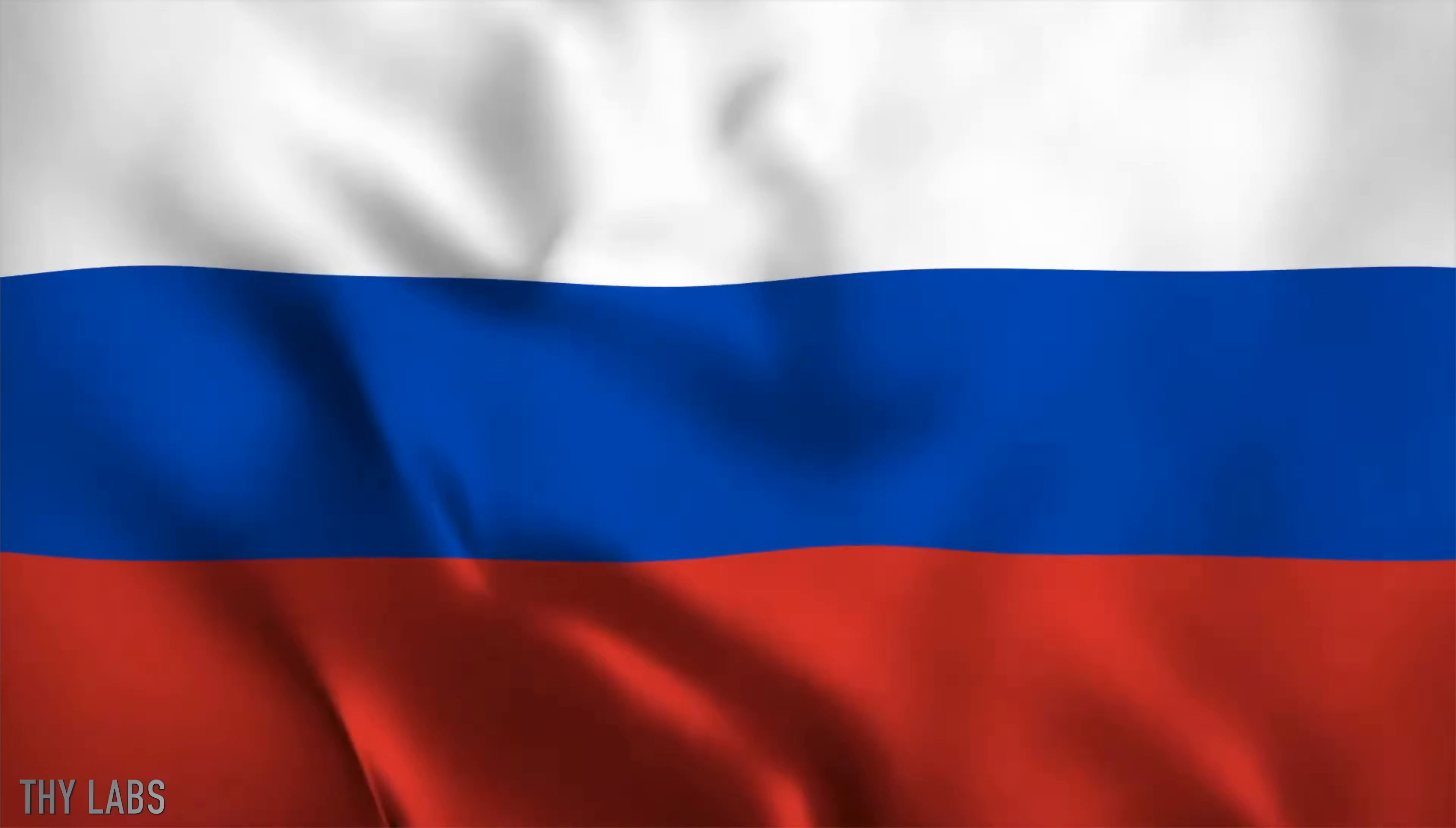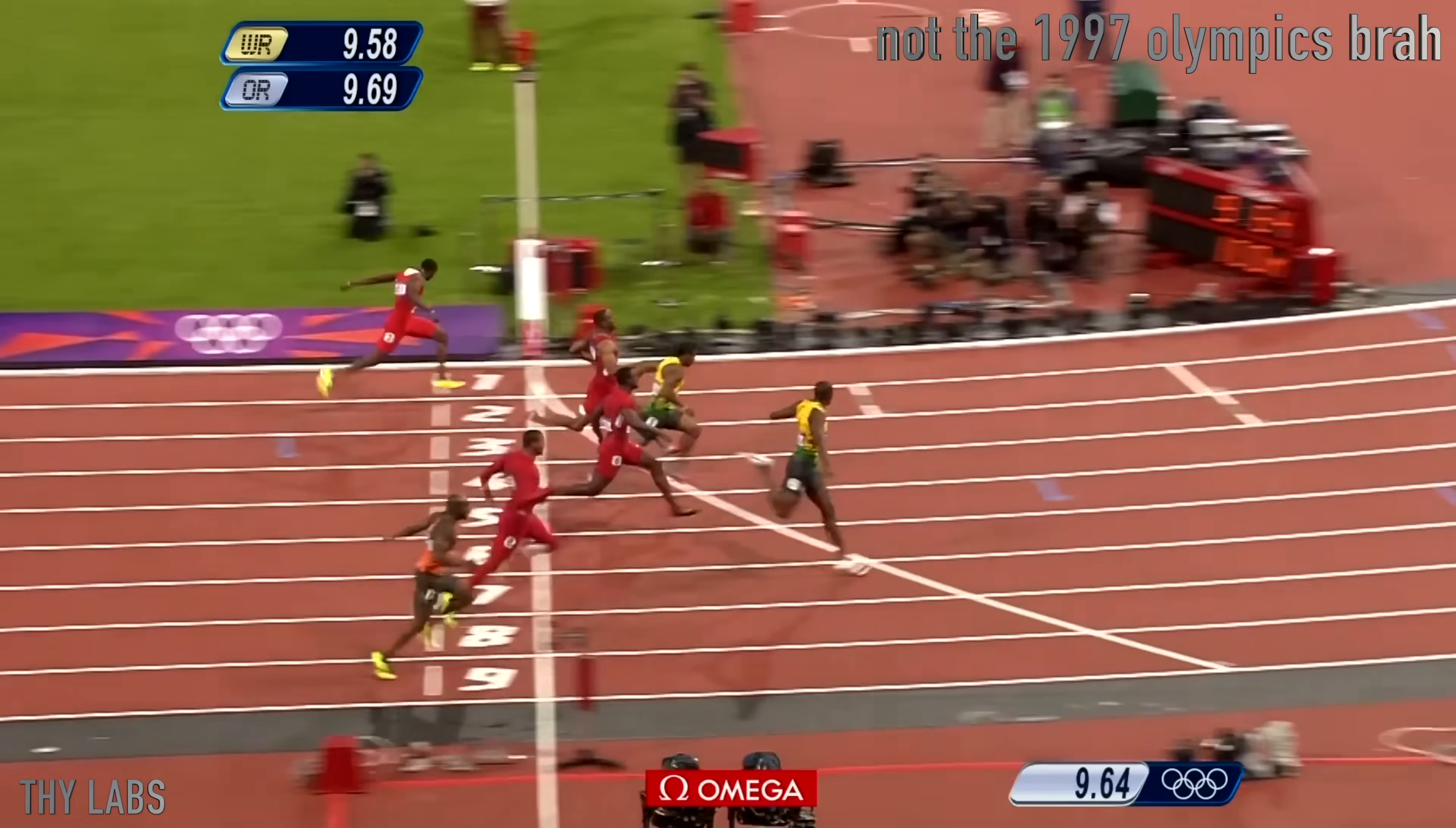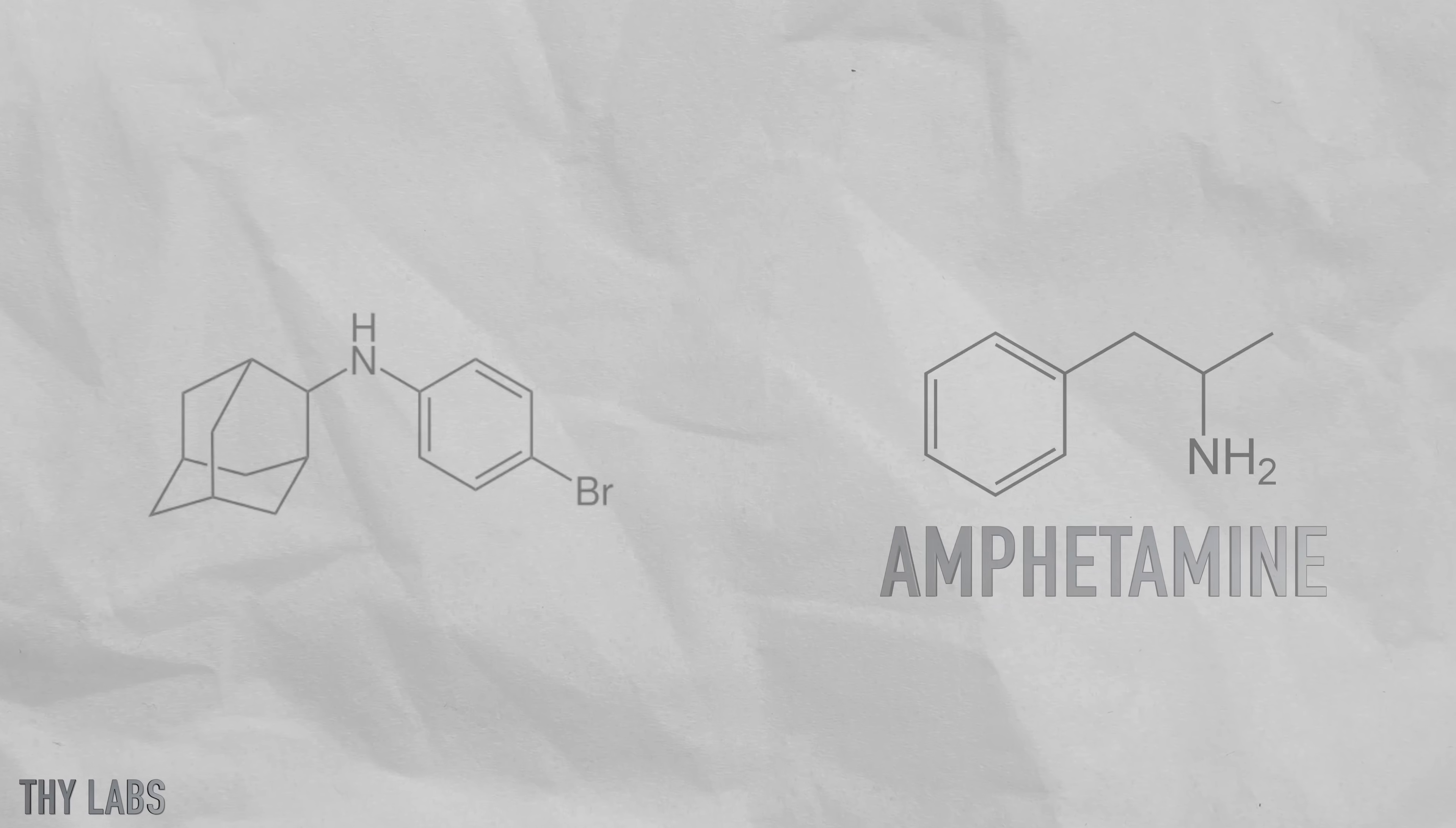This is Bromanthane. It is a Russian doping agent that was banned after the 1997 Olympics. To me it is fascinating that a molecule so big and so different from the usual phenylethylamines can have such an effect.